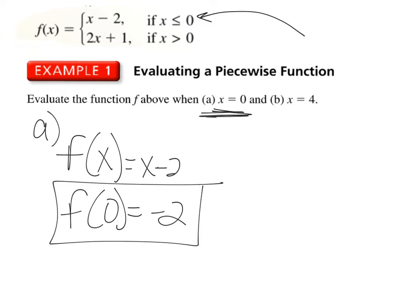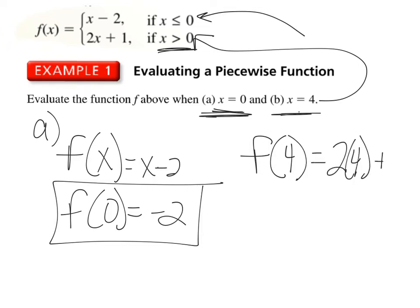Now, we want x equals 4. Well, we are going to use the second one, since x is greater than 0, and x is 4. So we're going to plug in f of 4 into 2 multiplied by 4 plus 1. And that's going to give us 9. So f of 4 is going to equal 9.